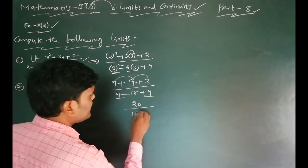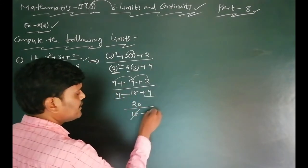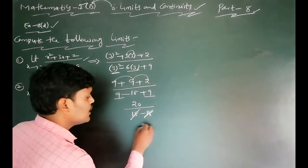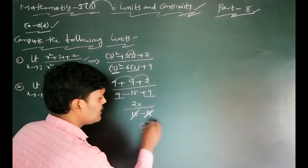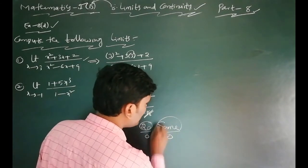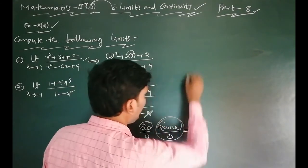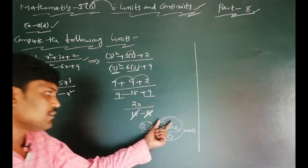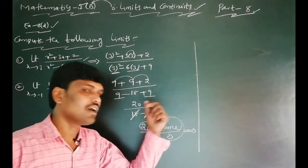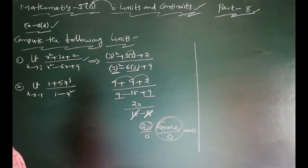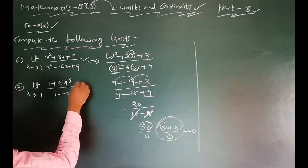In the denominator, we get 9 minus 18 plus 9, which equals 0. So the answer is 20 divided by 0. Something divided by 0 is undefined — as explained last class, this limit equals positive undefined.